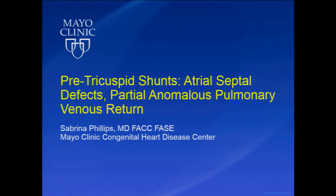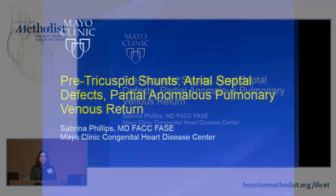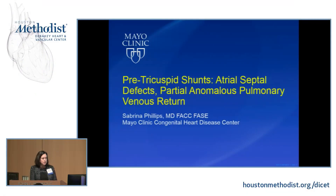We're going to break this morning session up into pre-tricuspid valve shunts, post-tricuspid valve shunts, and then we're going to have a little special topic on AV canal defects to really round out what I think is a good overview of the shunt lesion. So I'm going to start with the pre-tricuspid shunts and that includes atrial septal defects, partial anomalous venous return. I have no disclosures.